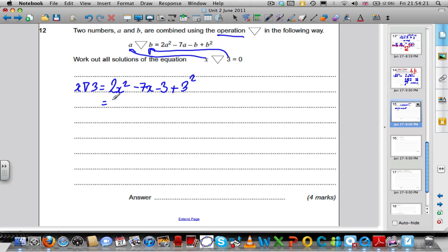Let's work that out. It's 2X squared minus 7X, minus 3 plus 9 is equal to plus 6. All of that, it tells us, is equal to 0. So we're trying to solve a quadratic equal to 0.